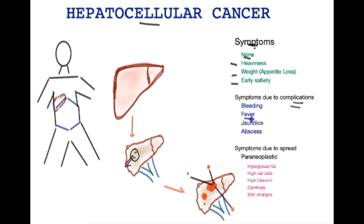Patients may also develop fever, which may be due to the breakdown of cancer cells in the center leading to necrosis. Sometimes jaundice may arise due to deterioration of liver function, or because the liver cancer compresses on the bile tubes in its vicinity, causing obstruction of bile and hence jaundice.